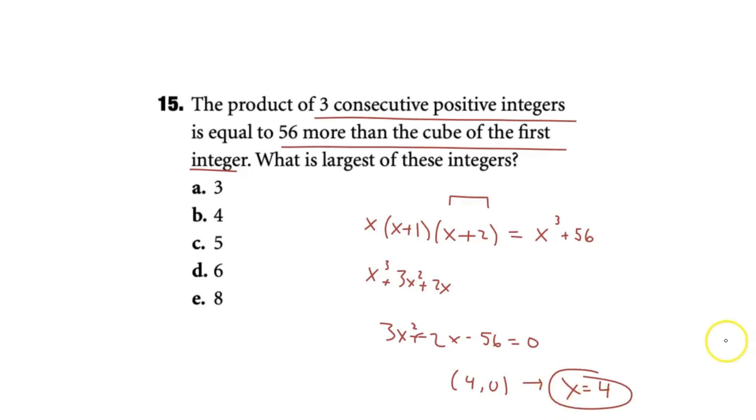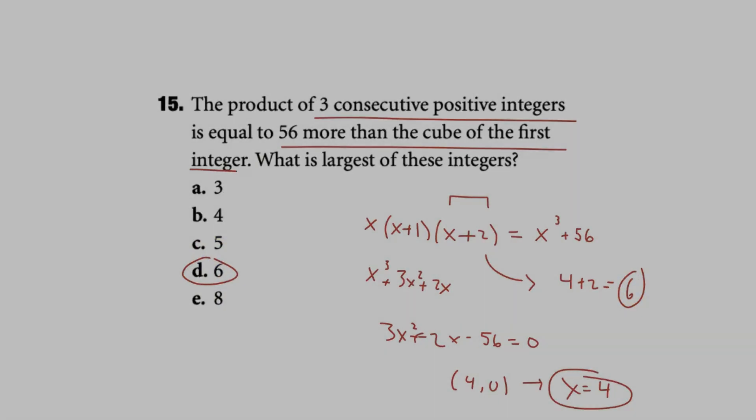And so we know x is equal to 4, and so now we can just take this. We know x would be 4 plus 2, is 2 after our first integer, that would be equal to 6, and so the largest of these three integers must be a value of 6. Our choice to pick is answer choice D.